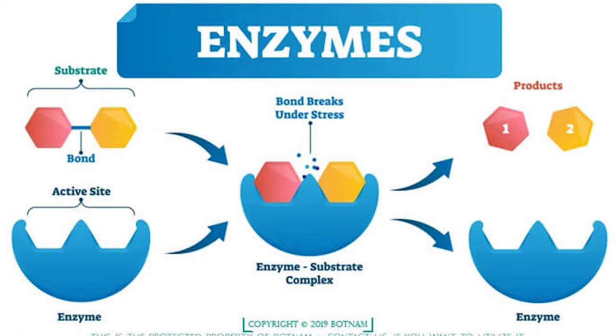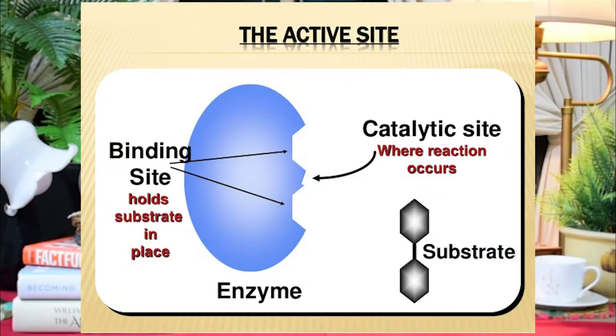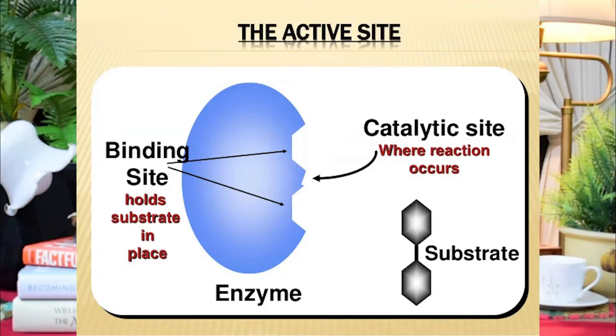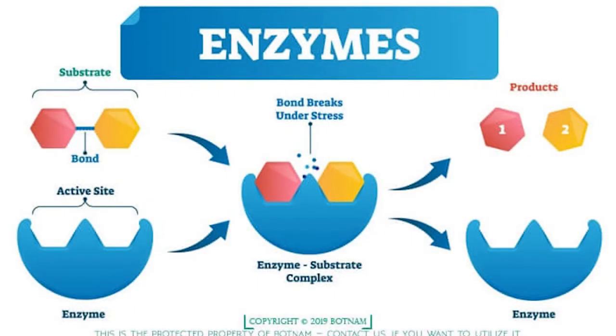There are two parts of the active site: the binding site and the catalytic site. The binding site recognizes the molecule — whether it is a suitable molecule or whether it will act as an inhibitor. When the substrate is attached to the binding site, the catalytic site becomes active and reacts with it. The end product is then removed and the enzyme itself is not consumed.